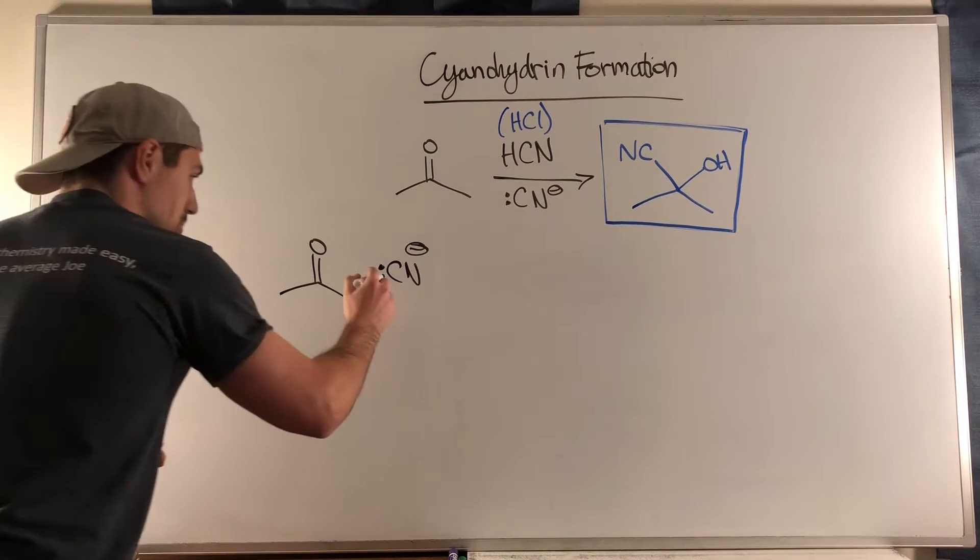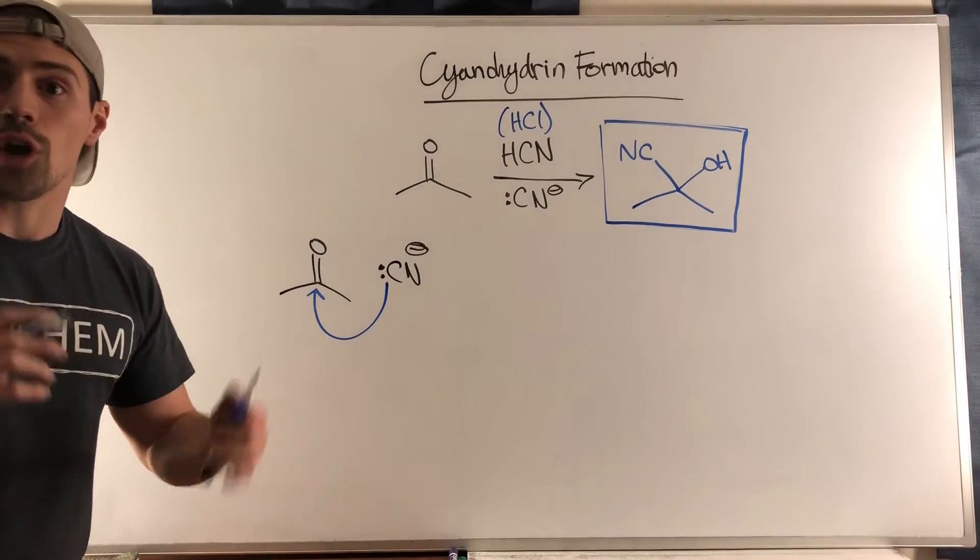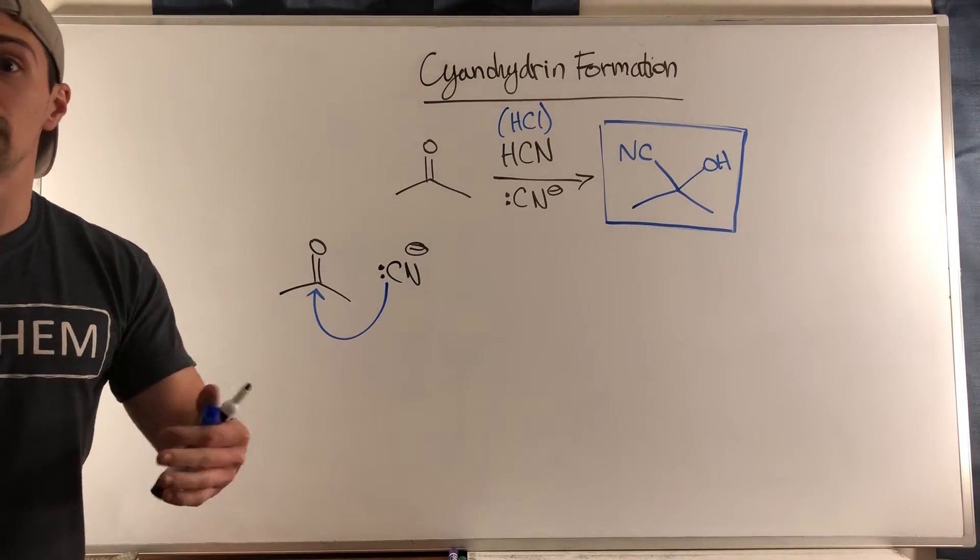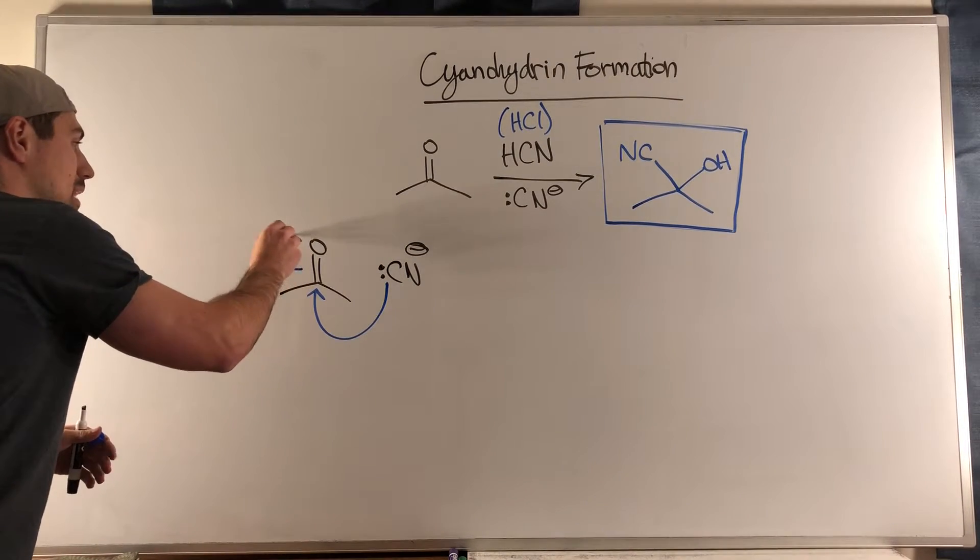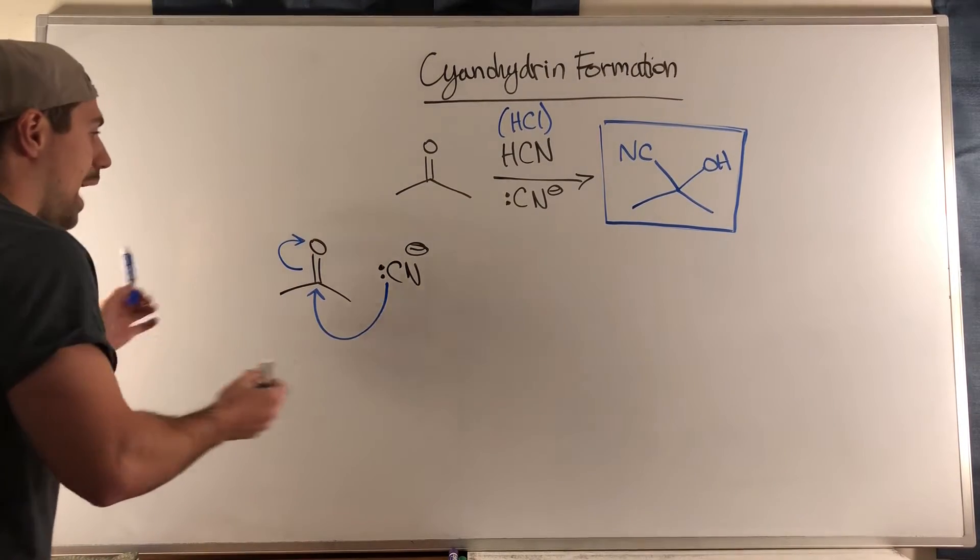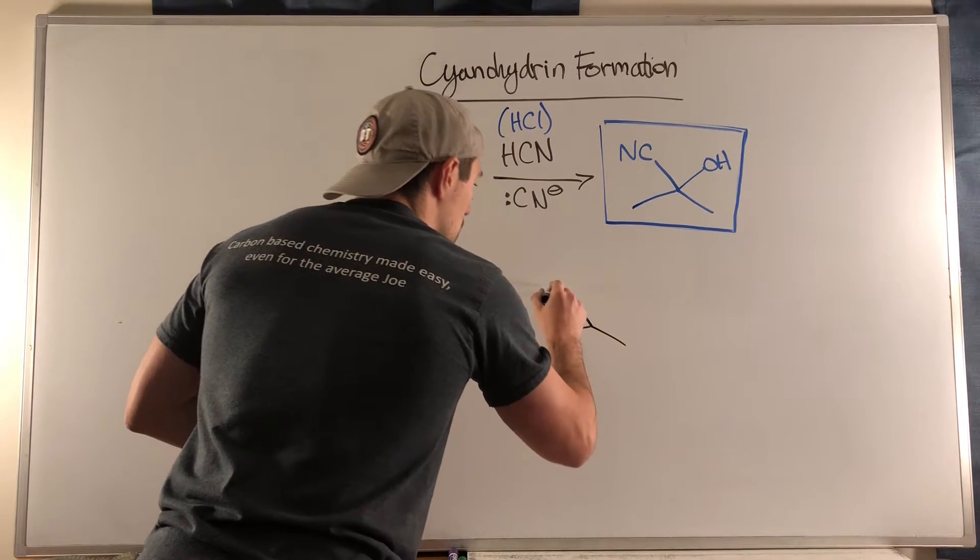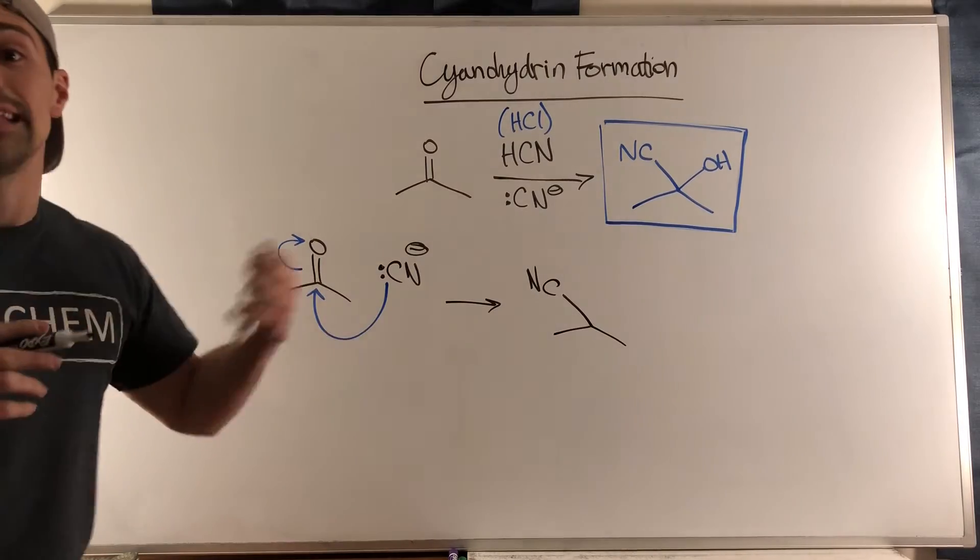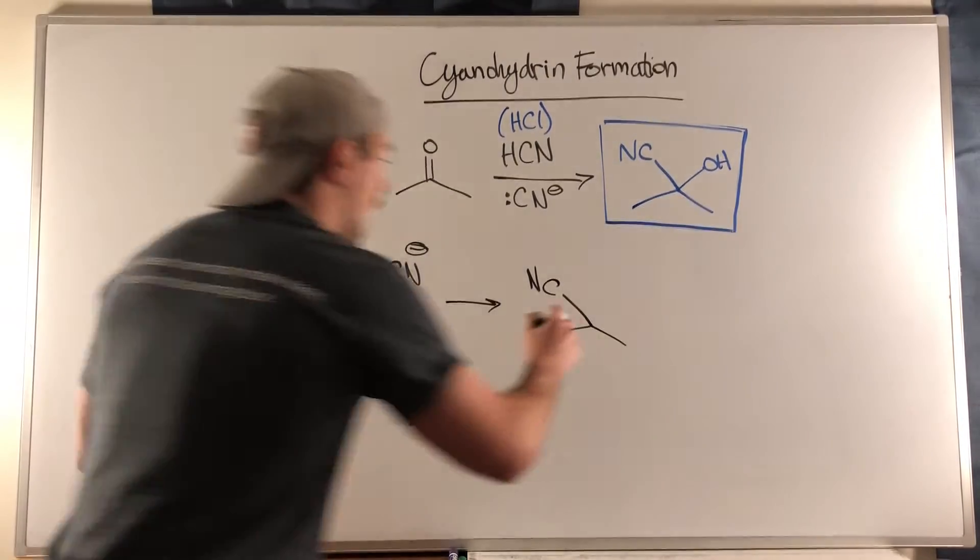You have your nitrile, it attacks the sp2 hybridized carbonyl carbon. We know it's trigonal planar, we know it can attack from on top and on bottom, and we kick up electrons like so. After the initial attack, we get our cyanide attached, we get the nitrile portion of our cyanohydrin, and then we produce this O minus, this oxygen with a negative charge.